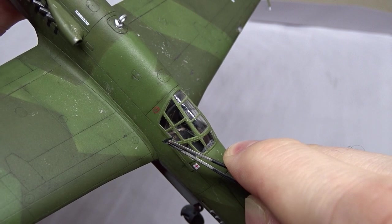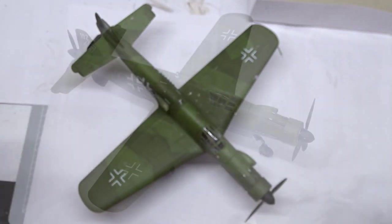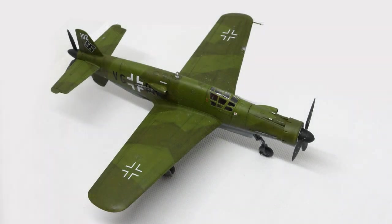As always the last step was to remove the masking tape from the canopy. And here is my finished Dornier 335 model.